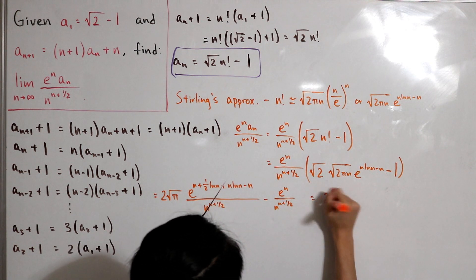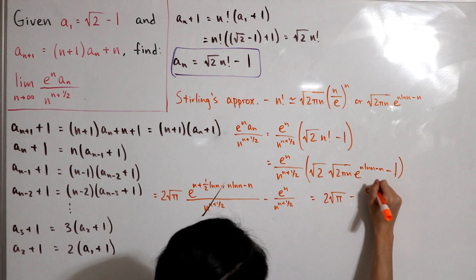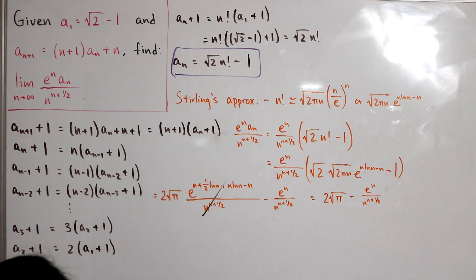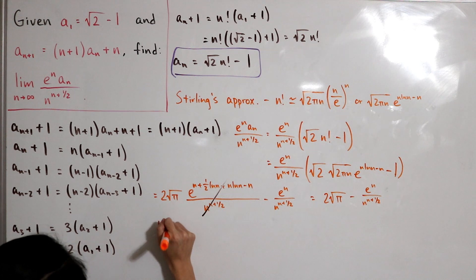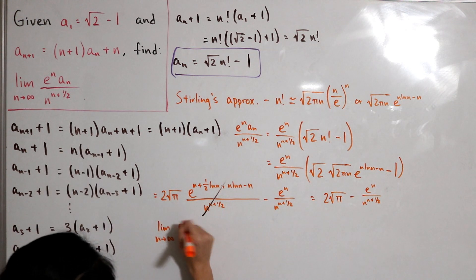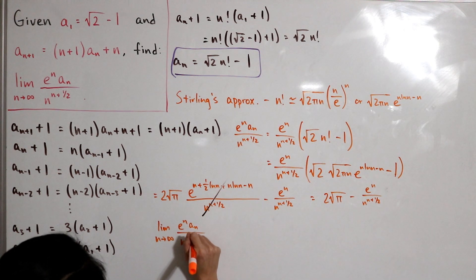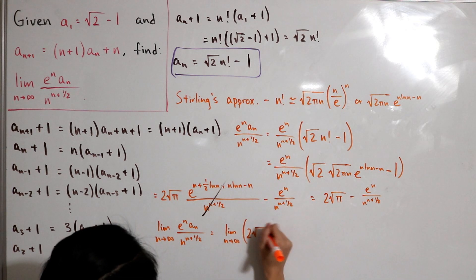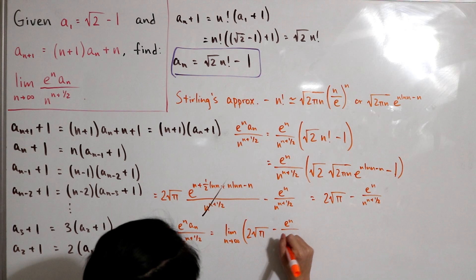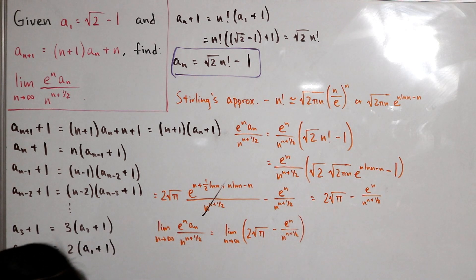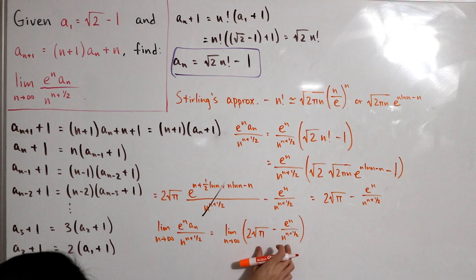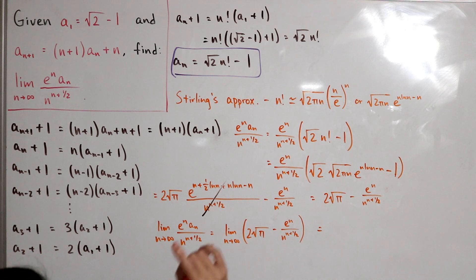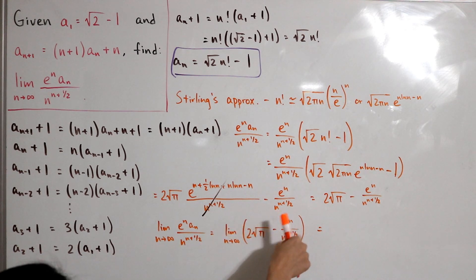That means we're left with 2√π minus e to the power n divided by n to the power n plus one half. Now let's actually take the limit of both sides. The limit as n approaches infinity of e to the n times a sub n over n to the (n + 1/2) equals the limit as n approaches infinity of 2√π minus e to the n over n to the (n + 1/2). Using sum of limits, the 2√π term is constant and stays as is.